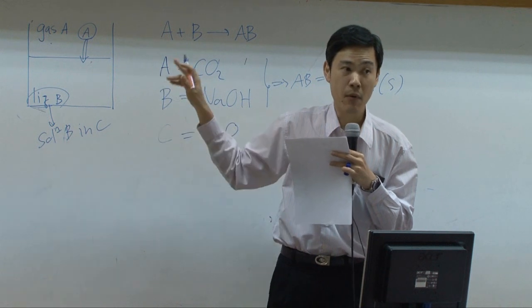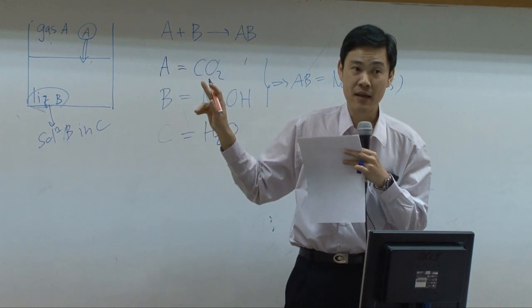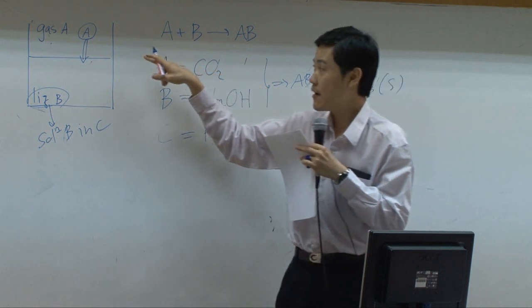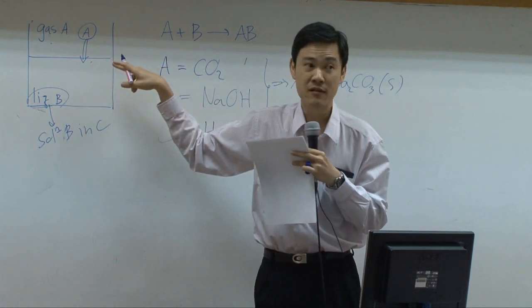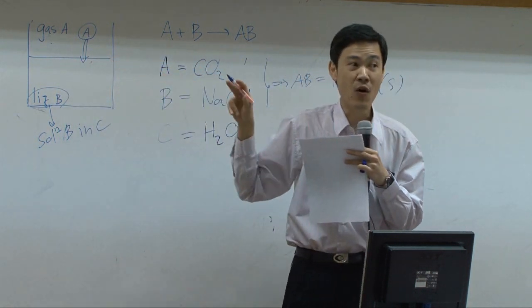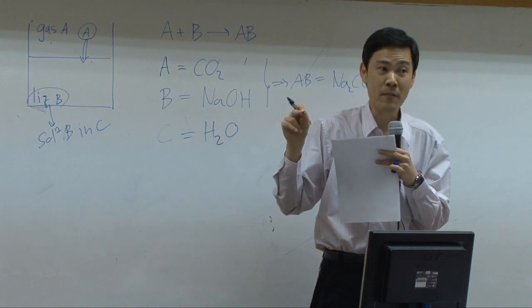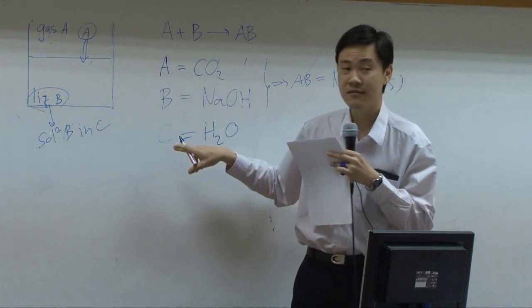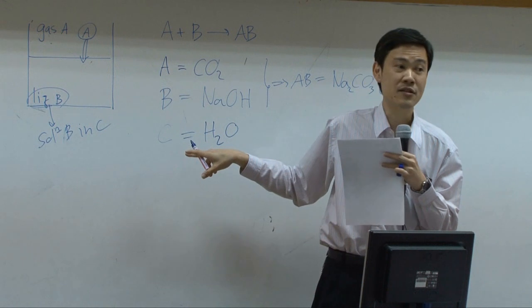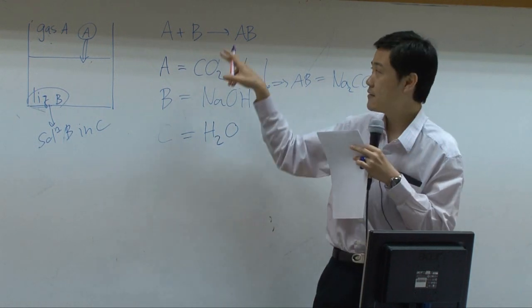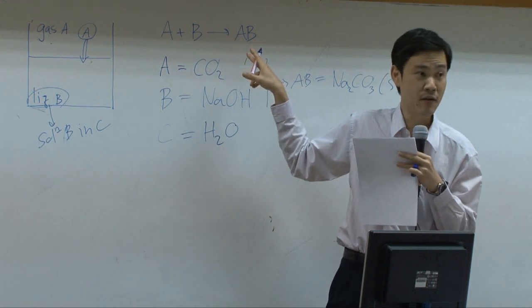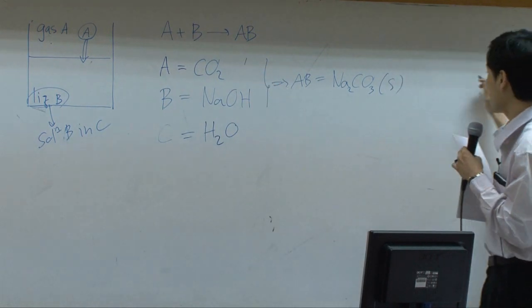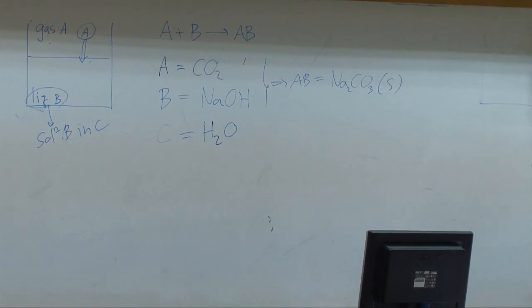On the other hand, if the reaction is instantaneously fast, once A meets with B, both A and B react to form AB right away. So around the interface there will be no A or B — what you have is just the solvent and the product AB.